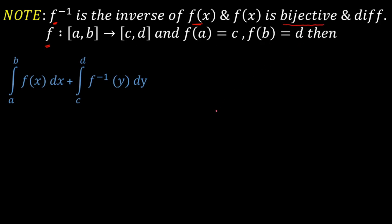Since the function is bijective, we have two cases: either the function is monotonically increasing or monotonically decreasing in its entire domain. Here I have assumed that f(x) is increasing in its entire domain — that's why f(a) = c and f(b) = d. Our objective is to find a nice result for this integration.